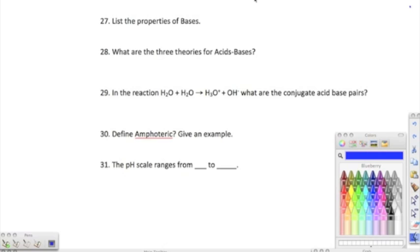Moving on to 27, it says list the properties of bases. We know that they turn red litmus paper blue. They're slippery. They're bitter. They have a pH between 8 and 14. There are hydrogen ion acceptors.